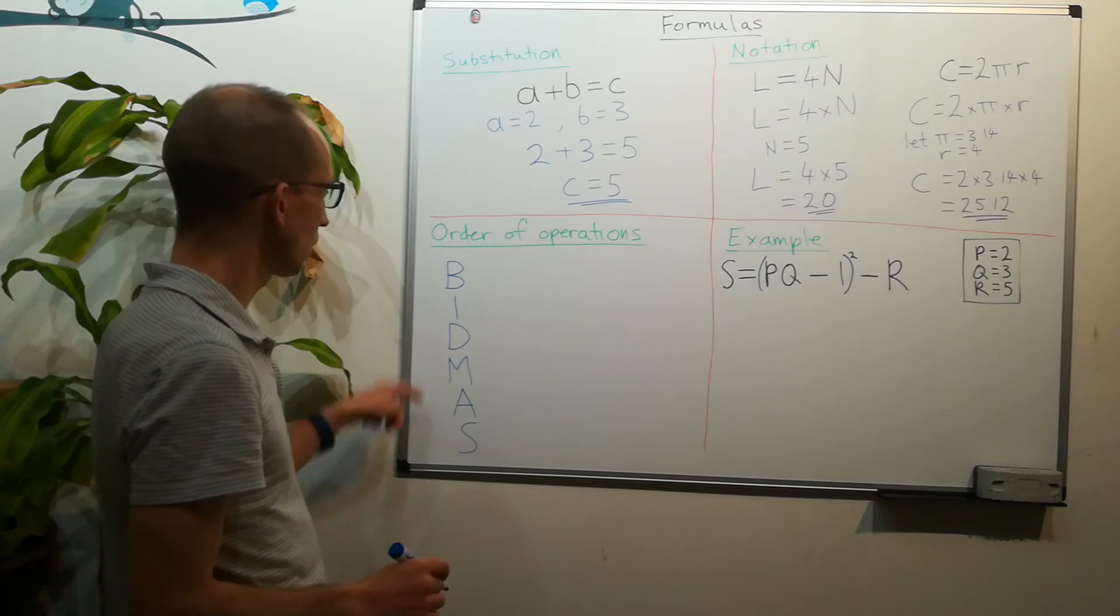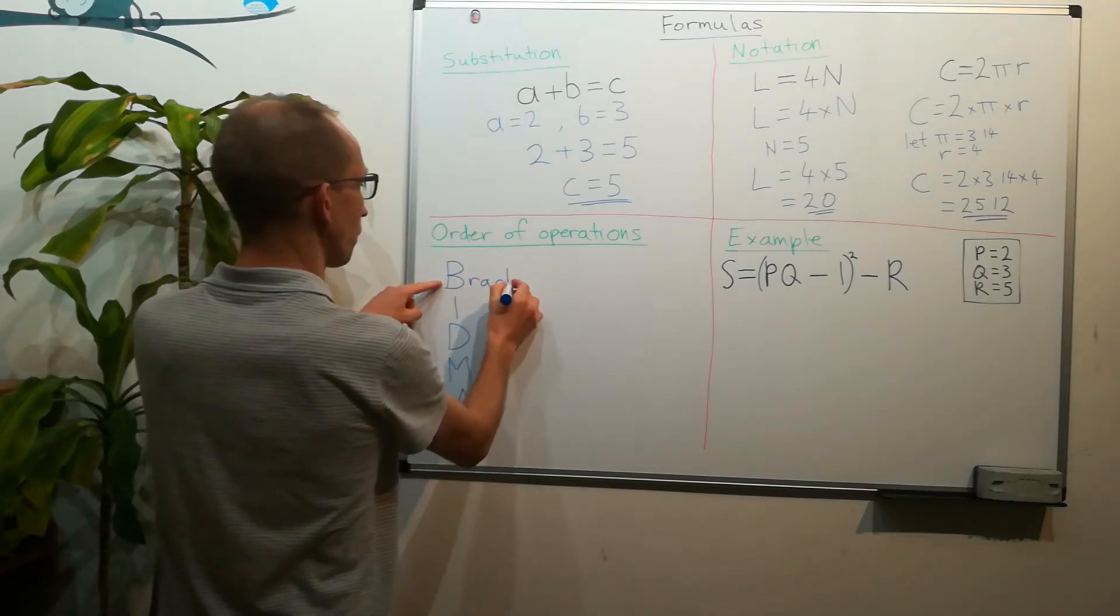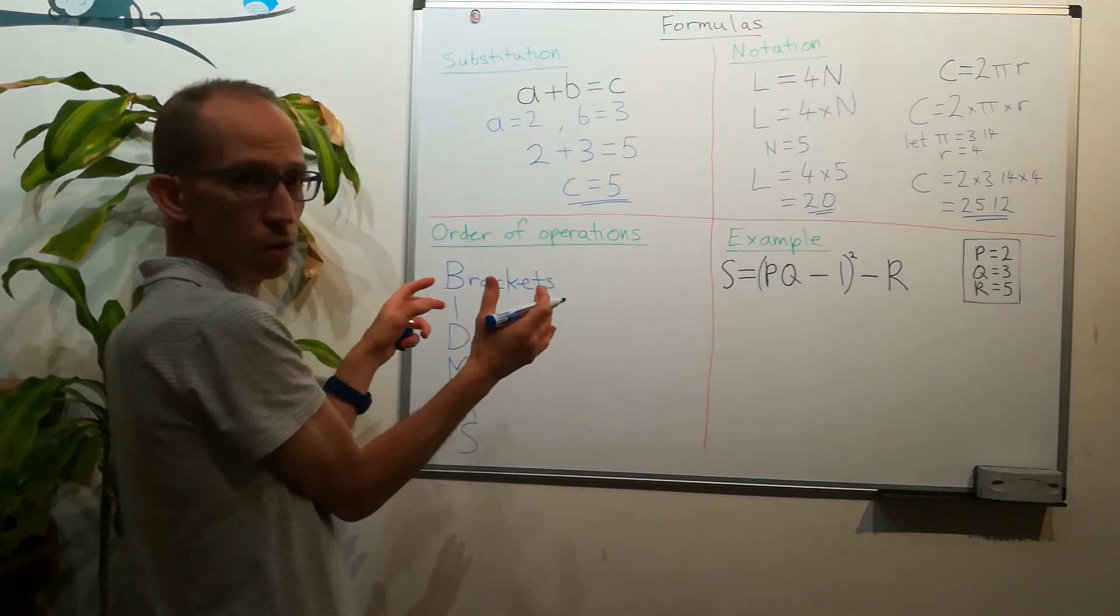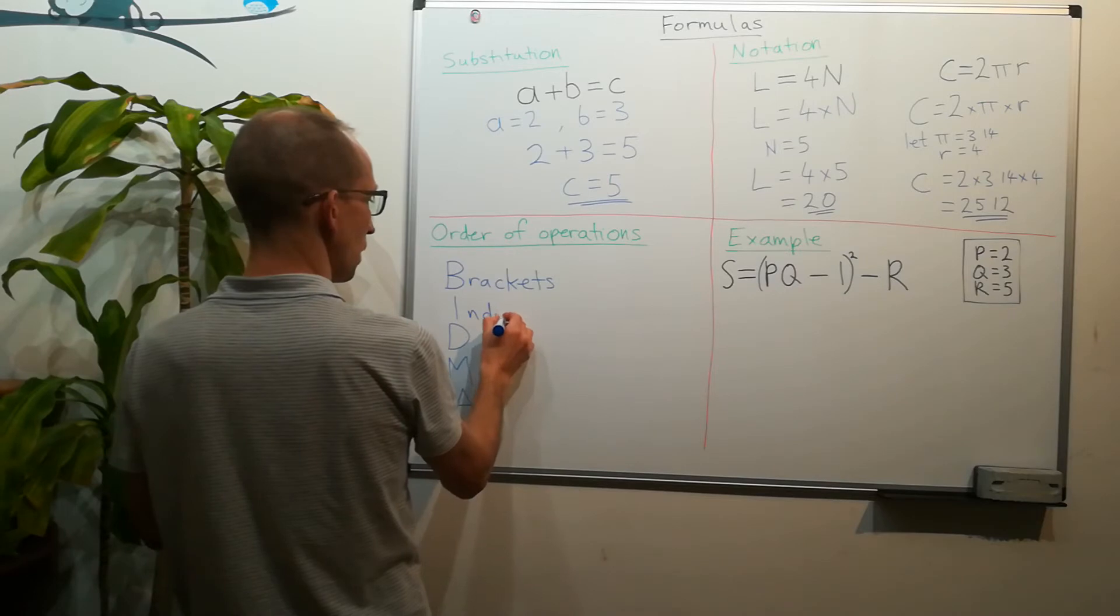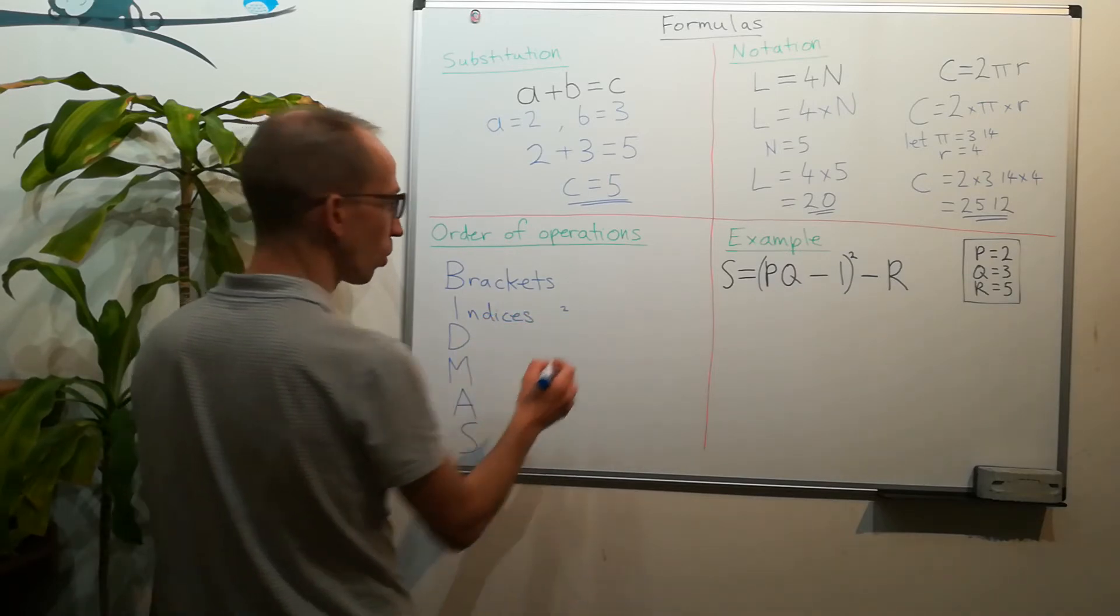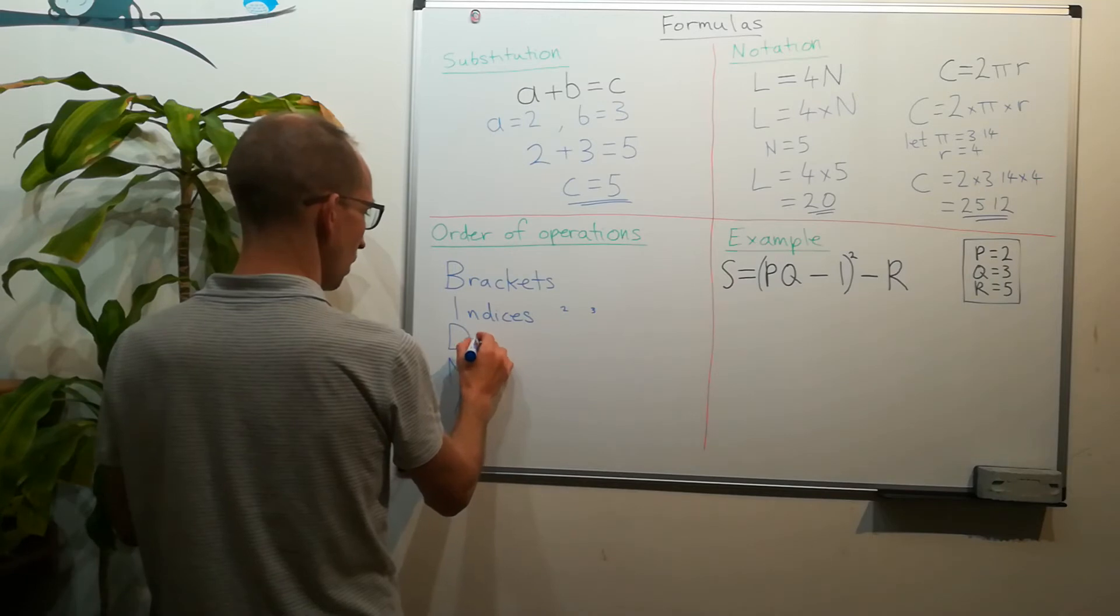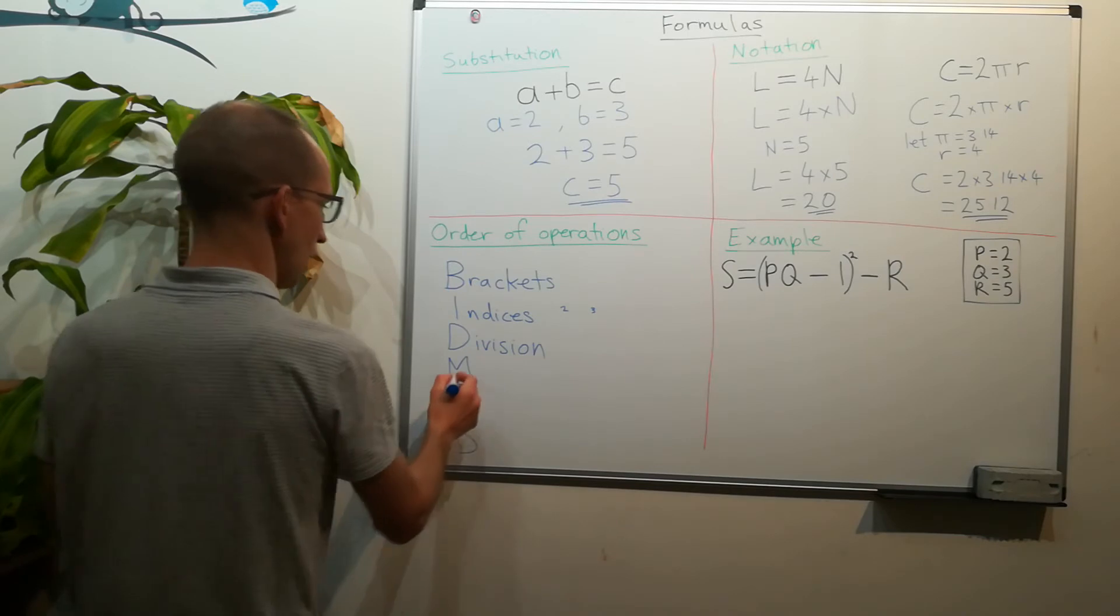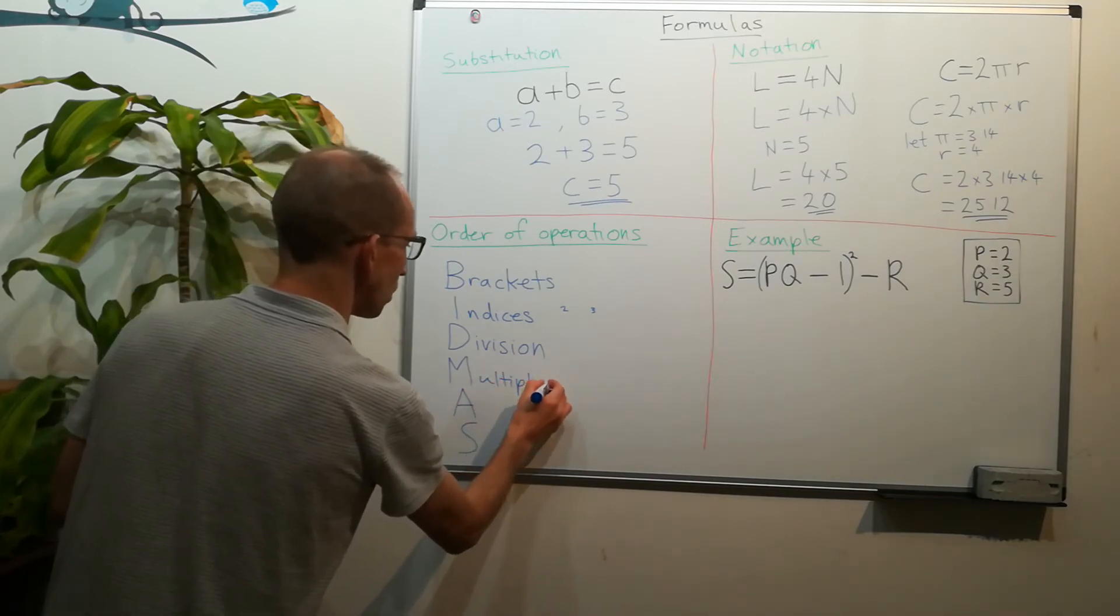BIDMAS, but you might have seen it written as BODMAS instead. And this acronym helps me to remember what I need to do first. So the B stands for brackets, so if I've got any brackets in an equation I always do what's in the brackets first. Then the I stands for indices, which is either like something squared or maybe something cubed. D stands for division and M for multiplication.